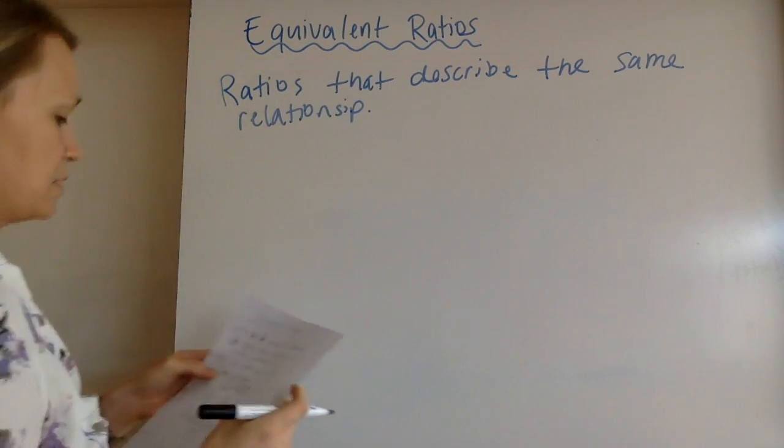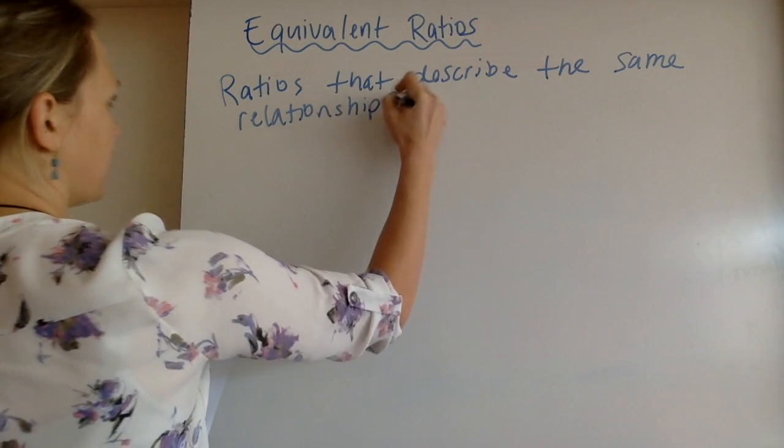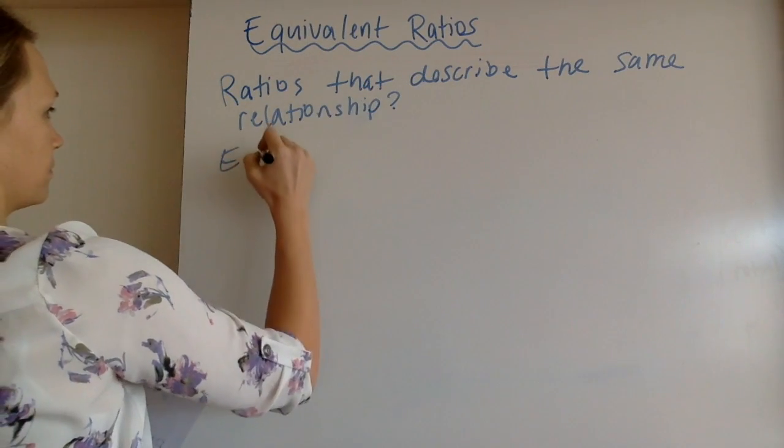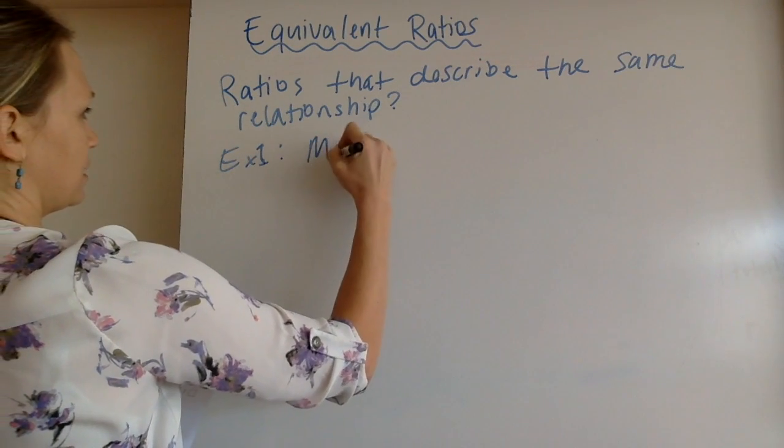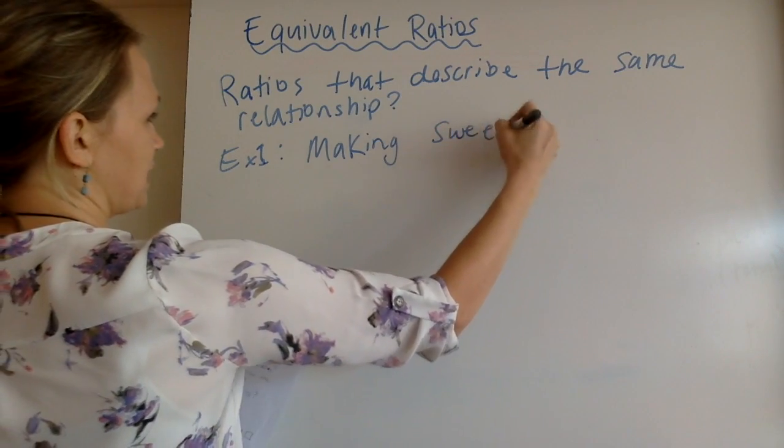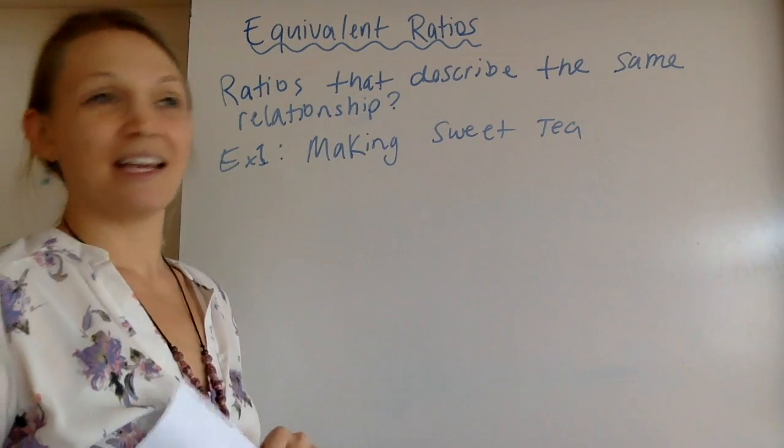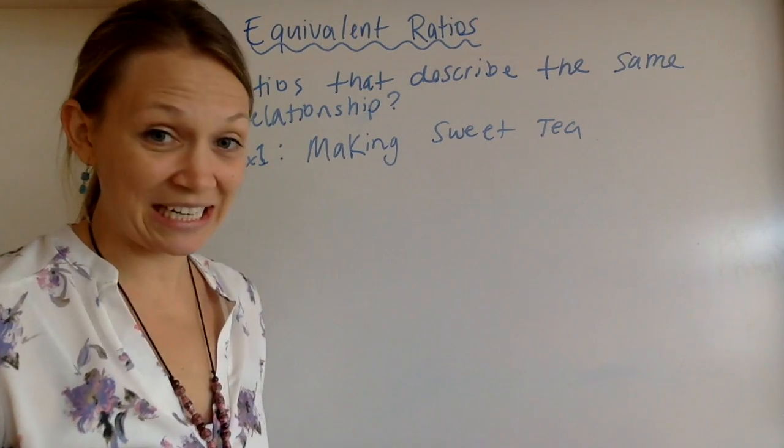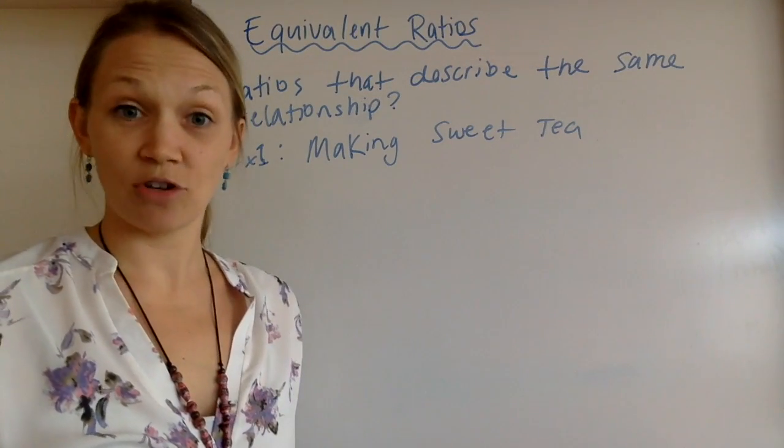I'm going to use an example. I'll call it example one, making sweet tea. So we're going to make some sweet tea, and to make tea sweet, we need sugar, or honey, or agave, something sugary.